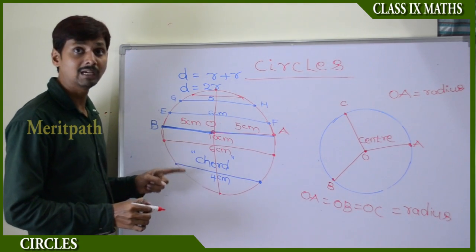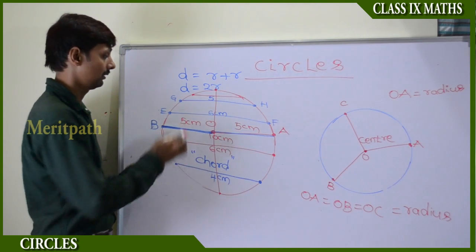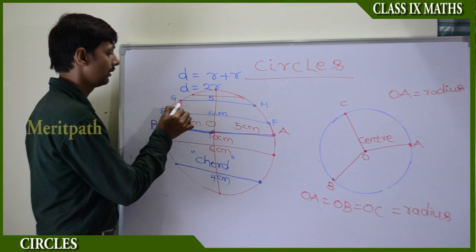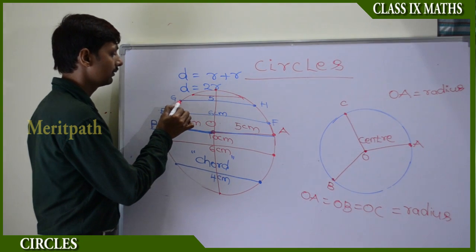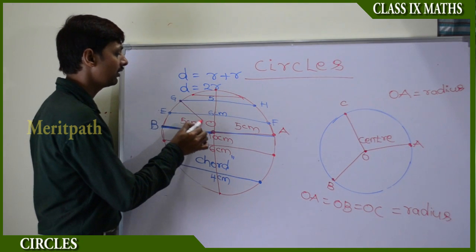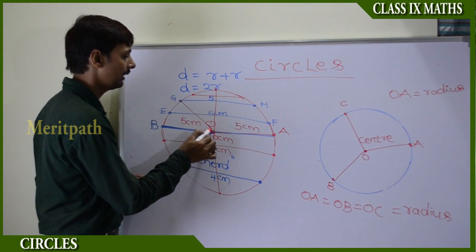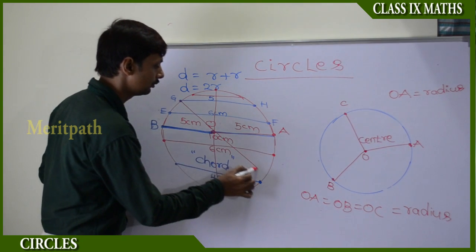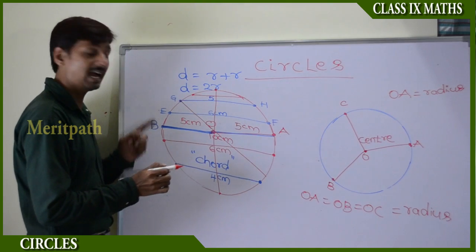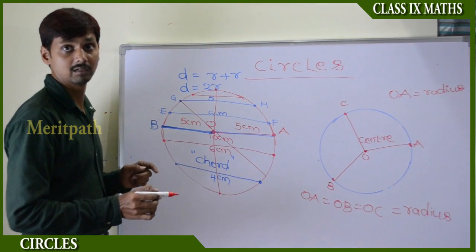We have drawn another diameter, and taking another point and joining it to the center of the circle gives yet another diameter.